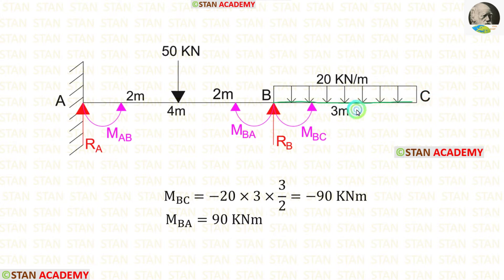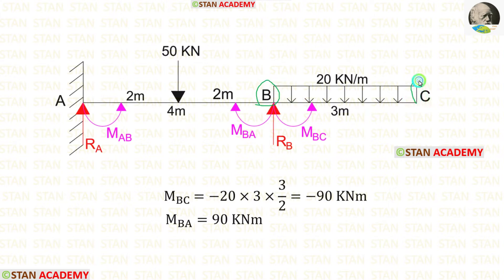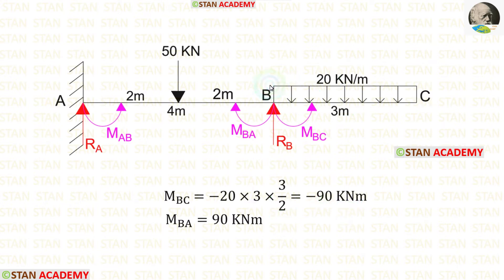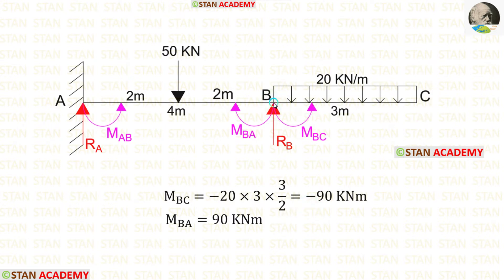For the overhanging span, there is a UDL of 20 kN per meter over a distance of 3 meters. To calculate the moment at B from C, we multiply the UDL by the distance and distance divided by 2, giving us 90. Since MBC is acting in the anti-clockwise direction, we add a negative sign, so MBC is minus 90 kNm.